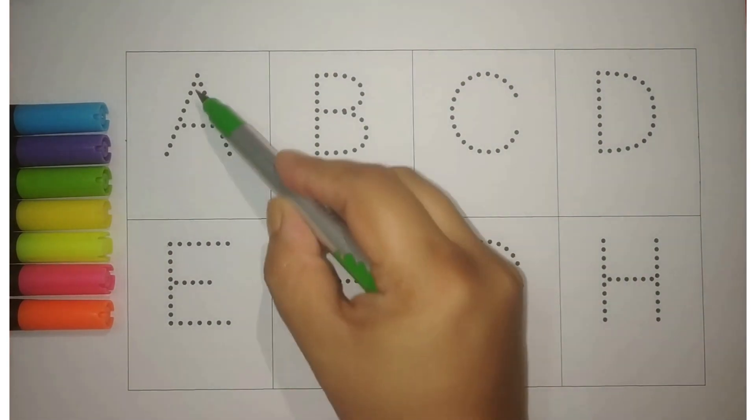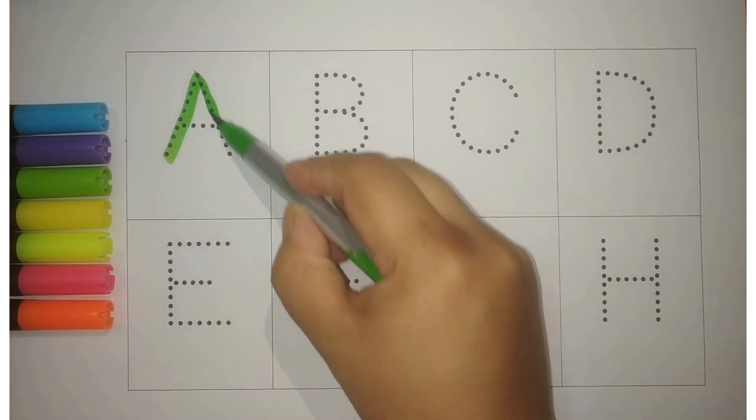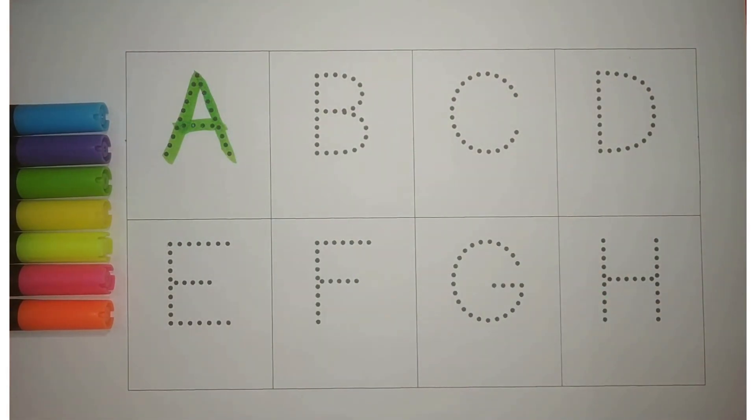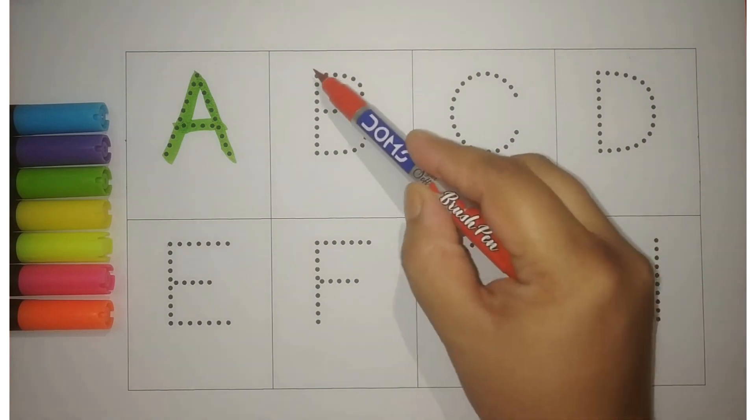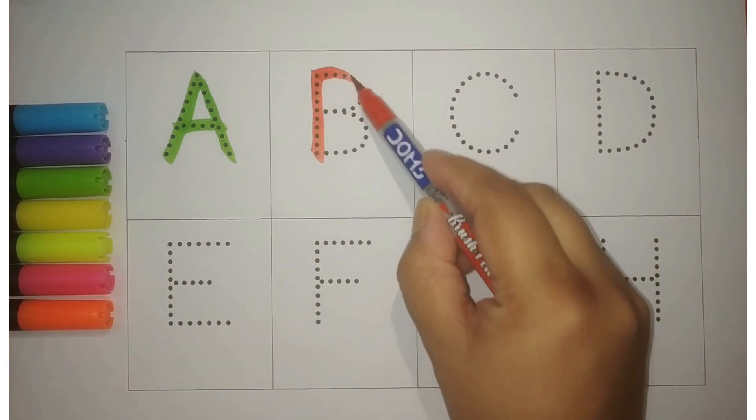Green A. A for apple, seb, yum yum. Red B. B for ball, gain.